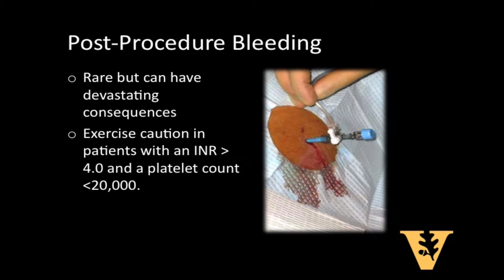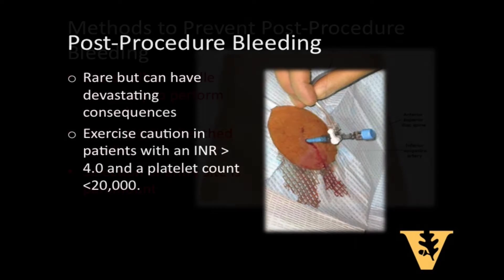As discussed previously in the indications and contraindications video, an elevated INR even greater than 2.5 and thrombocytopenia even as low as 20,000 platelets have not shown an increased risk of bleeding in patients receiving a paracentesis, and reversal of coagulopathies prior to the procedure is not necessary. However, caution is warranted in patients with an INR beyond 4.0 and a platelet count less than 20,000.